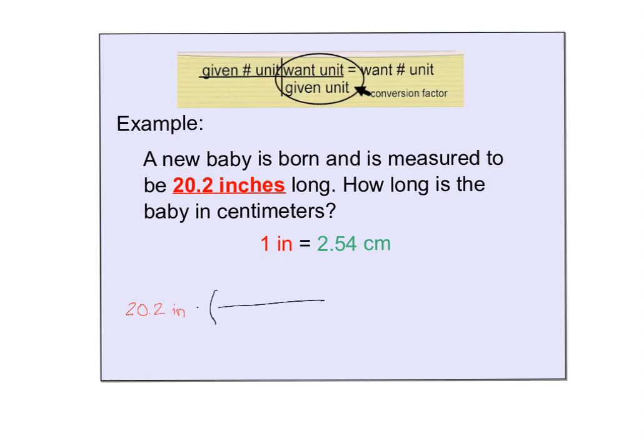I'm going to multiply by my equality, and you can see I looked up on the internet that 1 inch is equal to 2.54 centimeters. I want to get rid of inches, so the 1 inch is going to go on the bottom, and the unit we desire is centimeters, so the 2.54 centimeters goes on top.